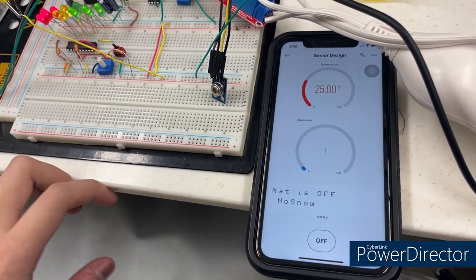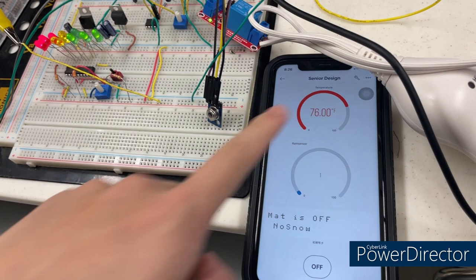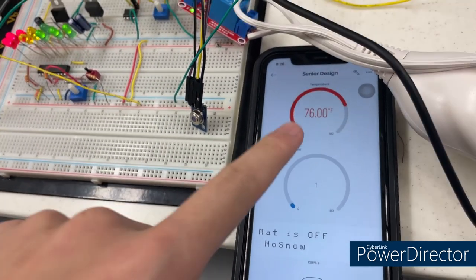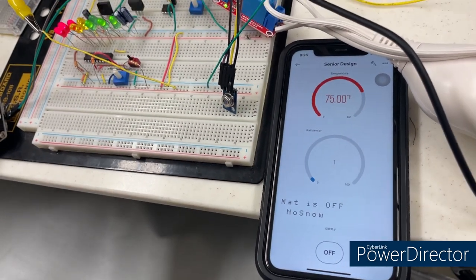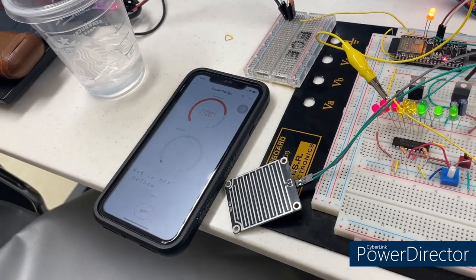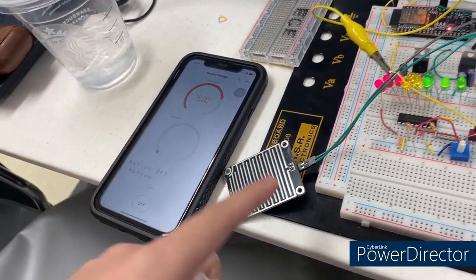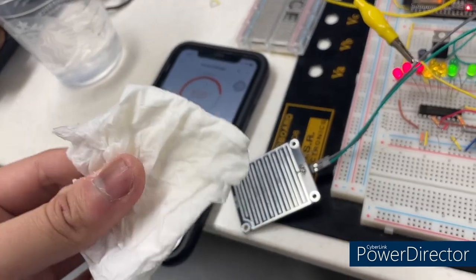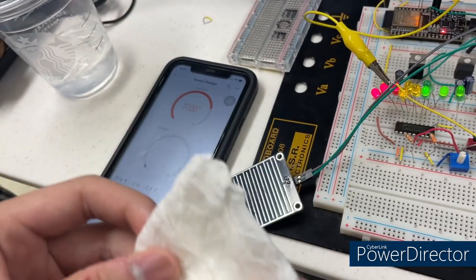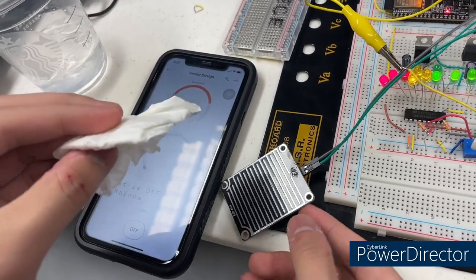which is 76 Fahrenheit. Now the second part will test our rain sensor. For demonstration, I use a wet tissue paper to demonstrate rainy days or snowing.